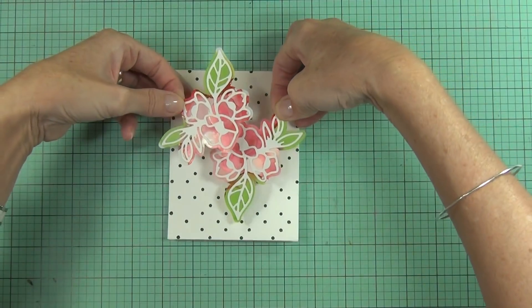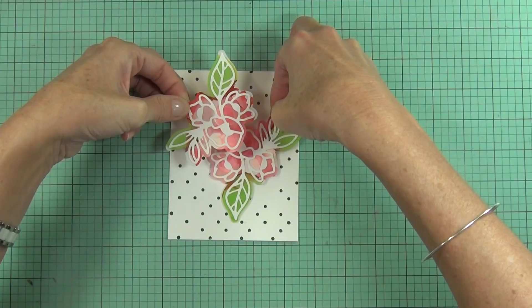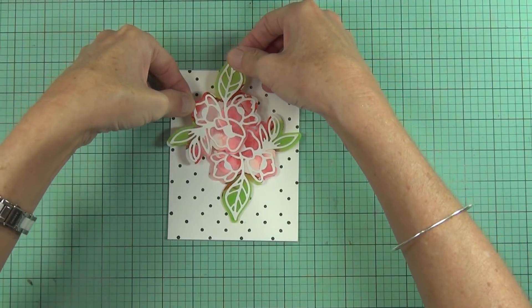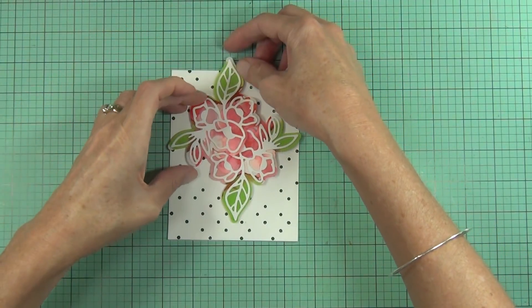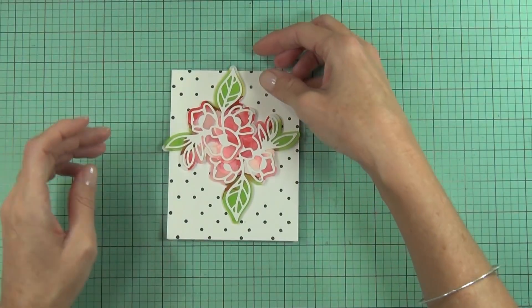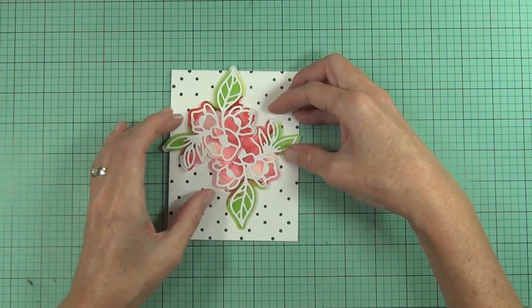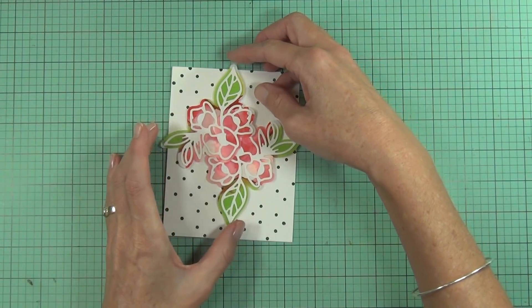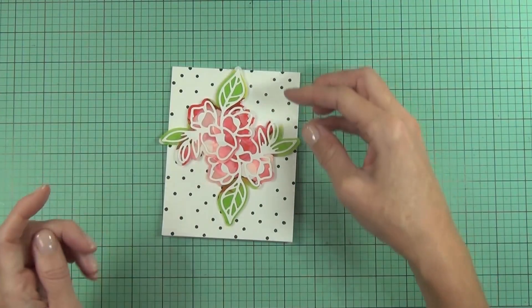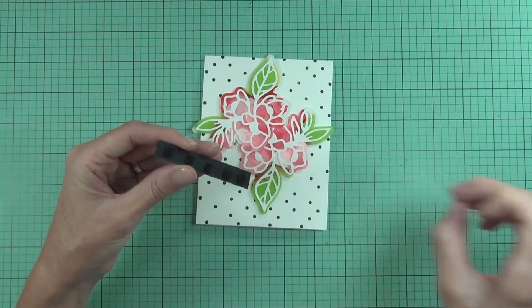I added some more matte medium and then displayed them on top of my card. All that's left to do is add my sentiment and I've used some black foam squares to do that. And that's my finished card for today.